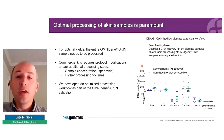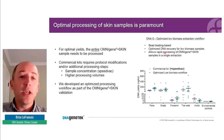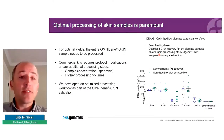So we ended up developing our own workflow — an optimized processing workflow specifically designed for OmniGene Skin samples. In essence, it's very simple: it's a bead-beating based extraction protocol. Bead-beating ensures good recovery of both gram-positive and gram-negative bacteria. We've really optimized the DNA recovery step for low biomass samples, and it allows for rapid processing of OmniGene Skin samples in a single extraction with no protocol modifications required.